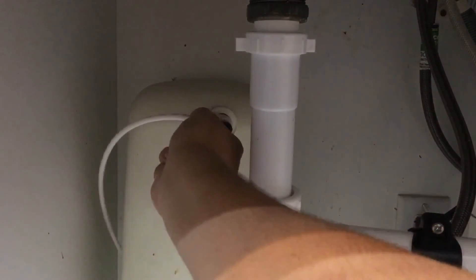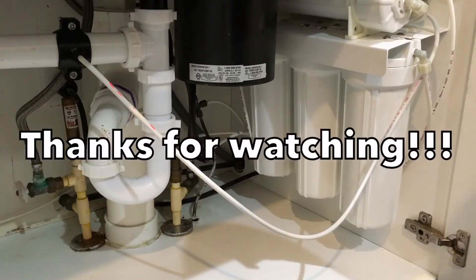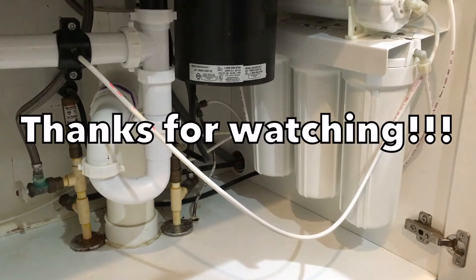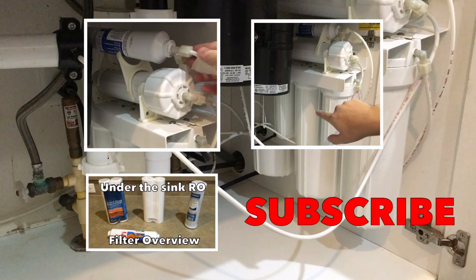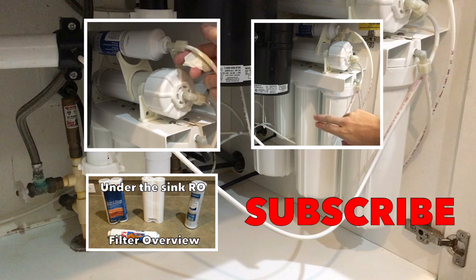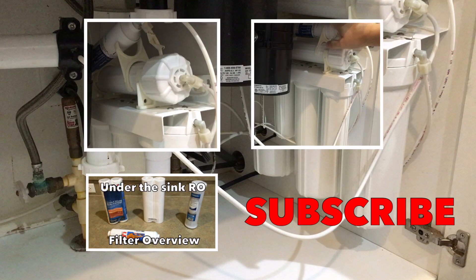Don't forget to turn on both of the valves and flush the system for 10 minutes. Thanks for watching. This is how you replace your first three or two stage filters on your reverse osmosis RO system that's under your sink. Comment, share, subscribe. Thank you.